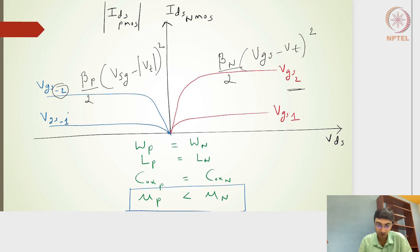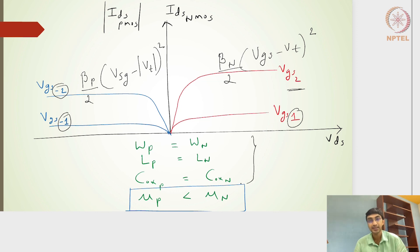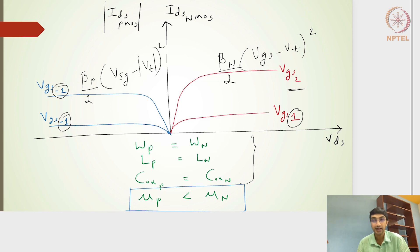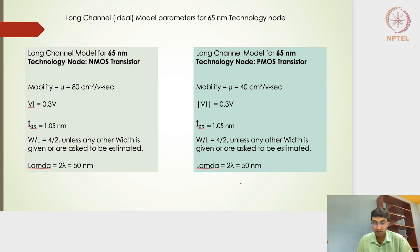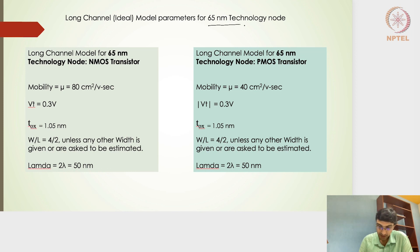For other voltages, if all dimensions of the PMOS and NMOS transistors are the same, the PMOS current is exactly half the NMOS current. So with the same dimensions, the NMOS transistor gives more current.